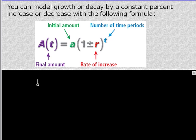We can model growth or decay by a constant percent increase or decrease with the following formula. This is used a lot in the financial world. It's an important basic formula. It gets more complicated as you have more factors. So the final amount you have is A(t) = a(1 ± r)^t. So the rate of increase, this is your rate of increase, percentage increase.